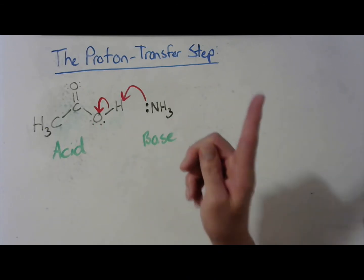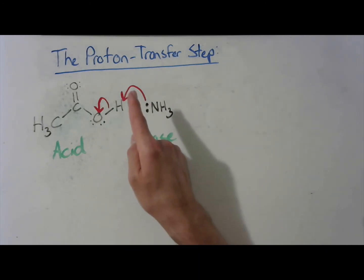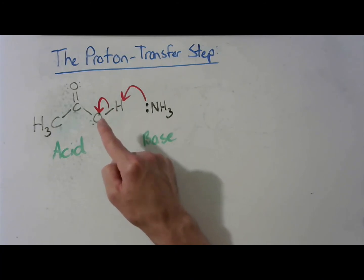So we're very intentional with how we draw our curved arrows. This curved arrow specifically means that this lone pair is becoming a covalent bond to this other atom, a hydrogen. And this curved arrow over here specifically means that this covalent bond is breaking and those electrons are moving to that oxygen.